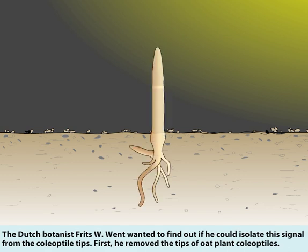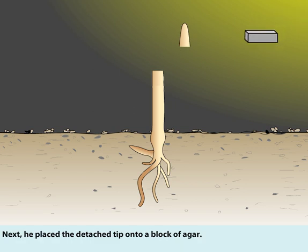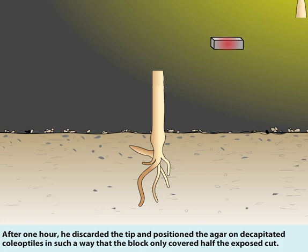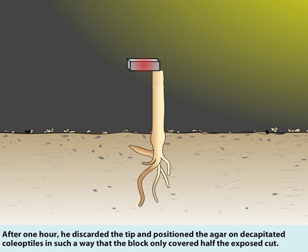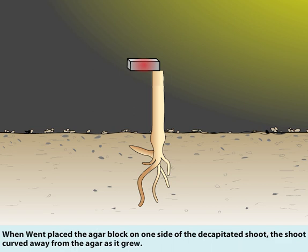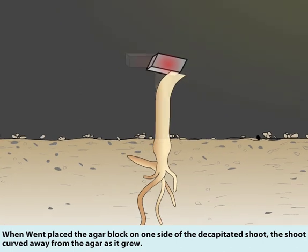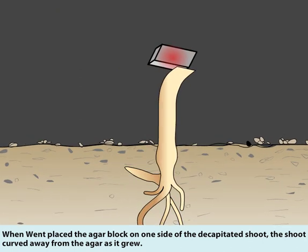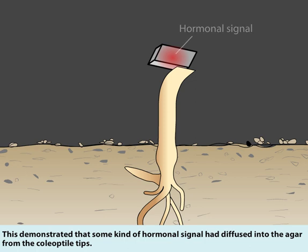The Dutch botanist Fritz W. Went wanted to find out if he could isolate this signal from the coleoptile tips. First, he removed the tips of oat plant coleoptiles. Next, he placed the detached tip onto a block of agar. After one hour, he discarded the tip and positioned the agar on decapitated coleoptiles in such a way that the block only covered half the exposed cut. When Went placed the agar block on one side of the decapitated shoot, the shoot curved away from the agar as it grew. This demonstrated that some kind of hormonal signal had diffused into the agar from the coleoptile tips.